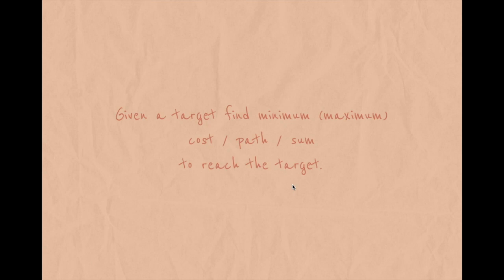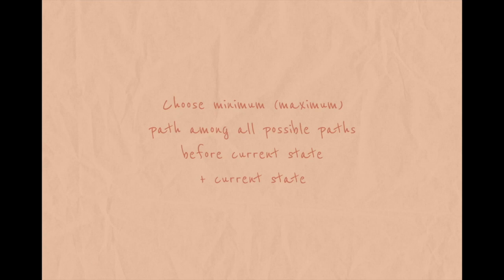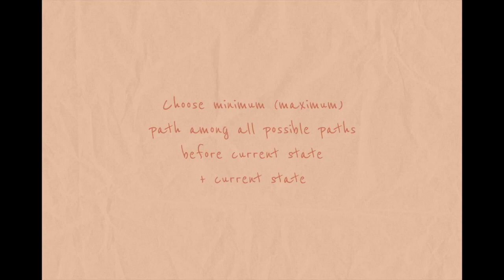In general, to find the answer for this pattern — given the target, find the minimum or maximum cost, path, or sum to reach the target — you choose the minimum or maximum path among all possible paths before the current state and add your current state. If you have any questions, put them in the comments. I'll also add example problems fitting this pattern. Thank you for watching, don't forget to subscribe and like, and I'll add more patterns in the coming weeks.